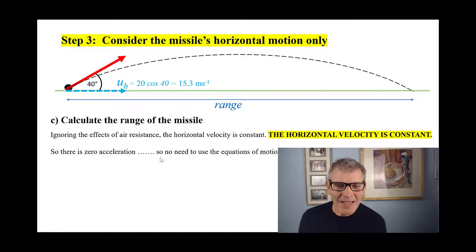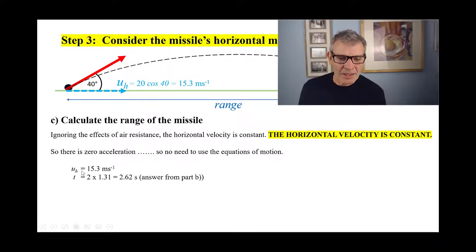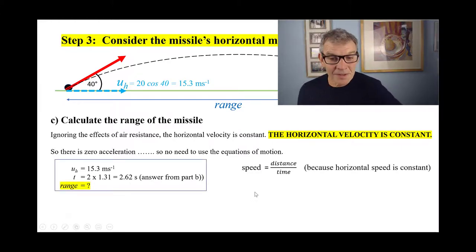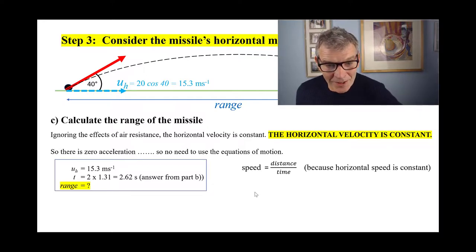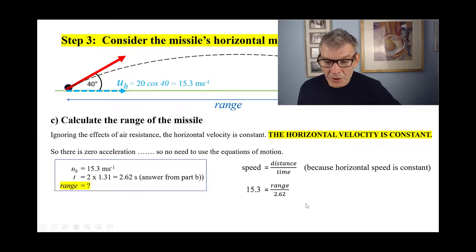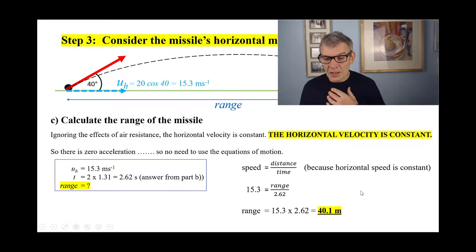The data for the horizontal motion: horizontal velocity = 15.3 m/s, total time of flight = 2.62 seconds. Since there is no horizontal acceleration, we simply use speed = distance ÷ time. Rearranging: range = 15.3 × 2.62 = 40.1 meters.